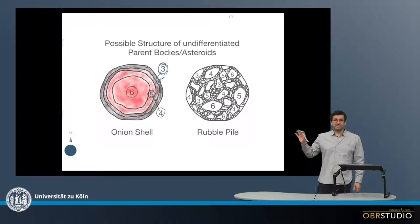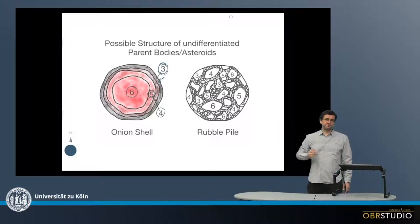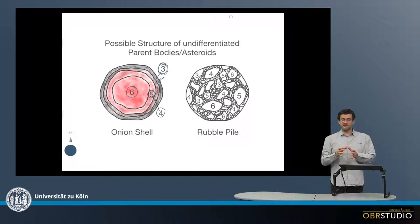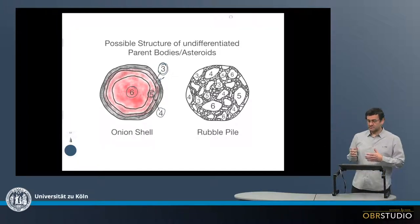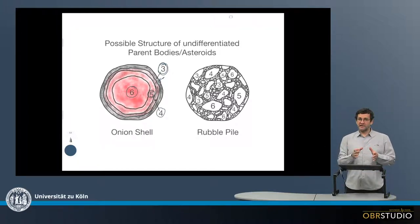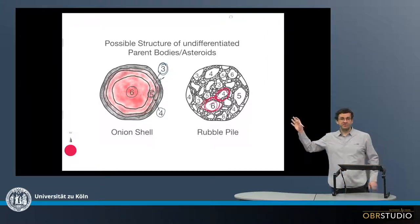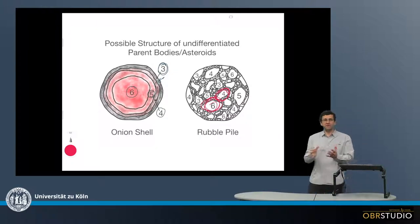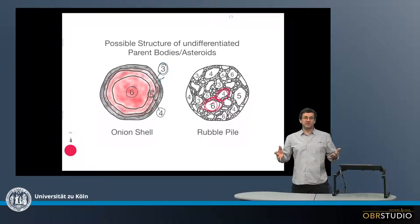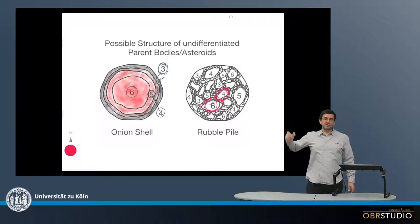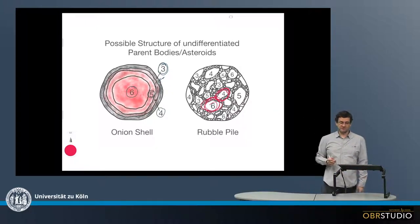The second type is the rubble pile, shown here on the right. In this rubble pile, the various petrologic types or various lithologies are in direct contact with each other. So for example, there is a type 4 lithology in direct contact with a type 6 lithology. And this is something you find in meteorites, so we know that rubble pile asteroids must exist or must have existed.